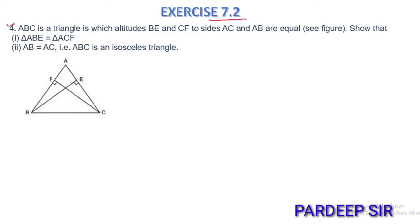Question number 4. ABC is a triangle in which altitudes BE and CF to sides AC and AB are equal. So that triangle ABE and triangle ACF are congruent, and hence AB is equal to AC, meaning ABC is an isosceles triangle.